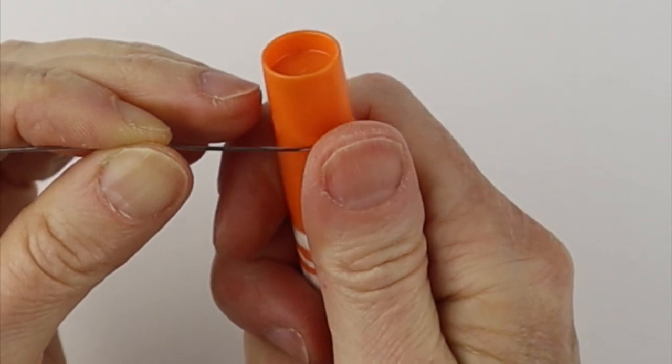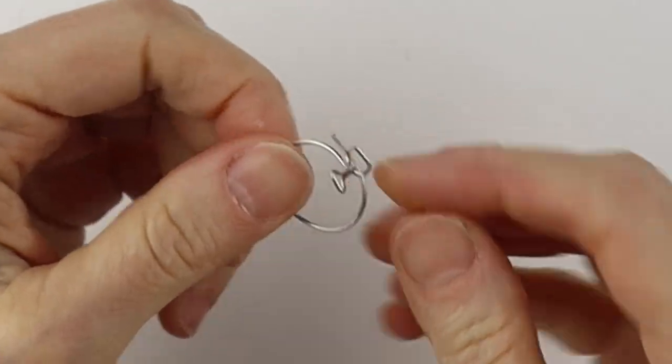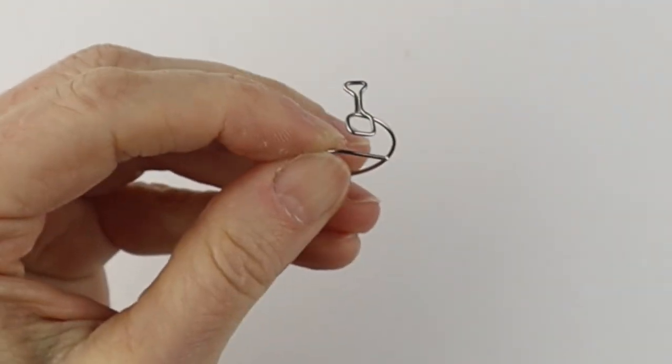And then take your marker, wind it around. Now if it's too long and you need to trim it, just open it up a bit.